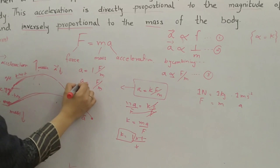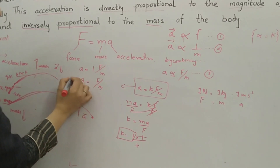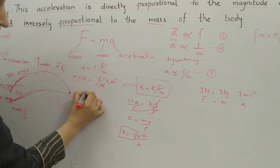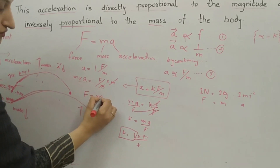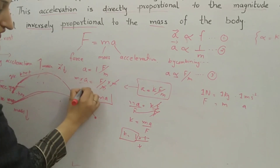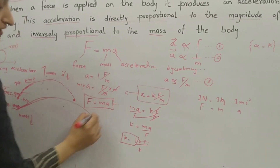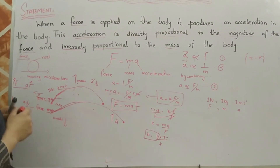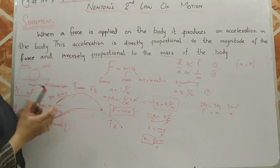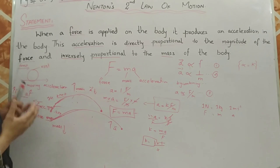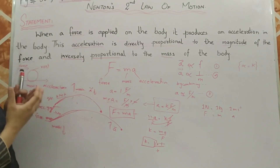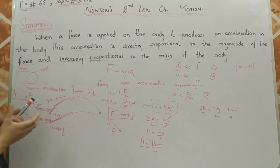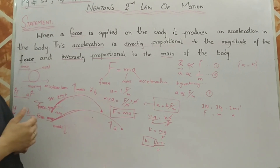By multiplying both sides by m, we get f equals ma, which is Newton's second law. Newton's second law tells us that the larger the mass, the less will be the acceleration produced when a force is applied. If we apply a force on a smaller mass, the acceleration will be greater. Thank you very much.